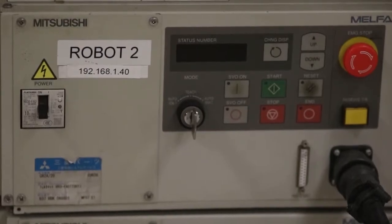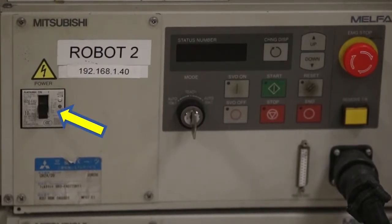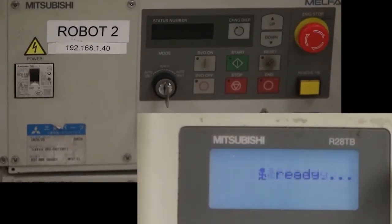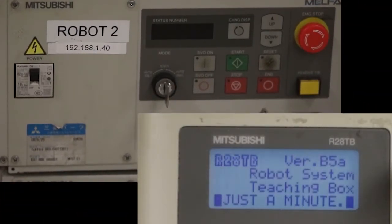The controller has a simple on-off switch on the front. To start the robot, move the switch to the on position. As you can see, the robot will go through a startup process. The teach pendant will also display information indicating when it is ready.